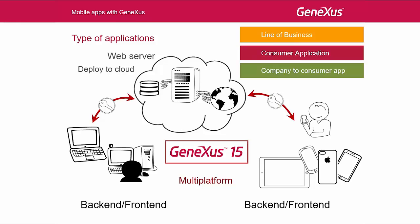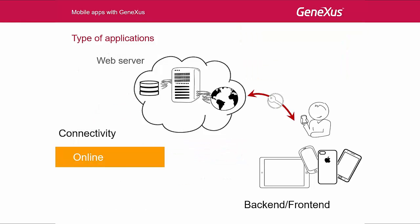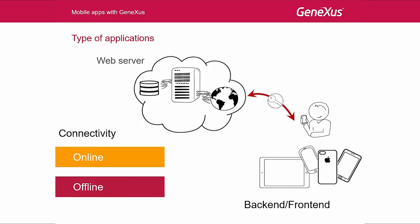An important objective for smart devices is to allow the application, or part of it, to keep running when it isn't connected to the internet. When using this application, we will want the user to continue viewing all the conference schedule and all the related information, even when there is no internet connection. When the connection is restored, the application will automatically update its data, which will be stored in a local database in the device, synchronizing with the server.